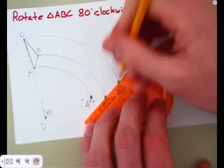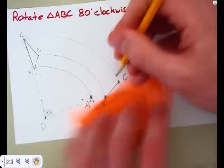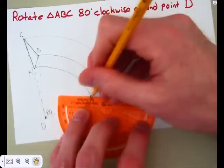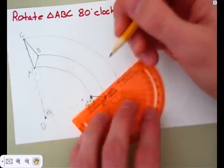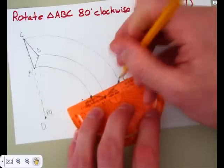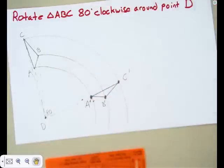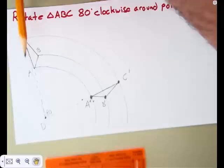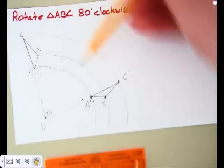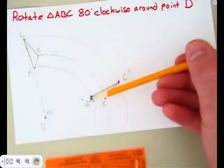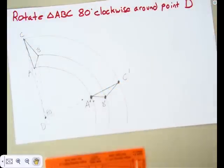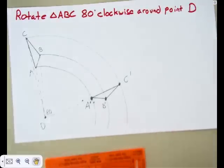And so now I just reconnect the points to form the image, triangle A prime, B prime, and C prime. So you can see how this triangle ABC rotated around, landing here at A prime, B prime, and C prime. That's how you do a rotation with a compass and a protractor.